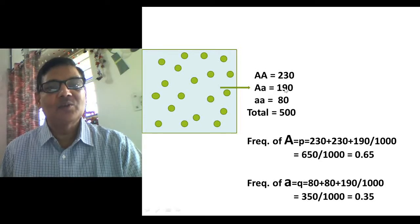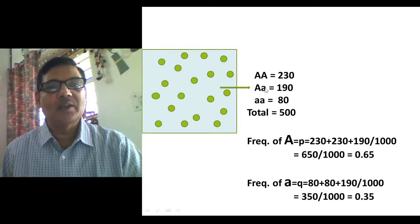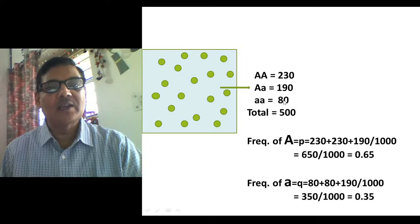In the case of heterozygotes, 190 alleles will be of capital A type and 190 will be of small a. In the case of homozygous recessive aa, since such individuals are 80 in number, the total number of small a alleles in this case will be 160.